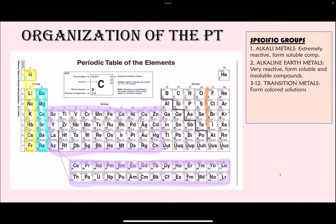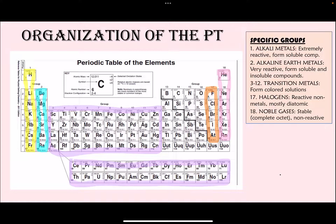Group 17 elements are called the halogens — they are very reactive non-metals and are mostly diatomic. Group 18 elements are your noble gases — they are stable, have a complete octet, and do not react.